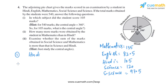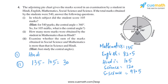Now let's move to Part 2: how many more marks were obtained by the student in Mathematics than in Hindi? In Mathematics the student obtained 135 marks, and in Hindi they obtained 105 marks. So, 135 minus 105 equals 30. They got 30 more marks in Mathematics than in Hindi.